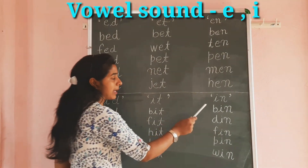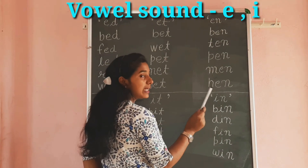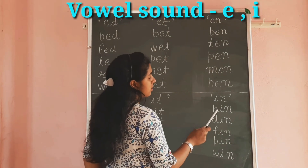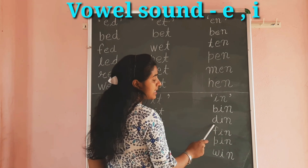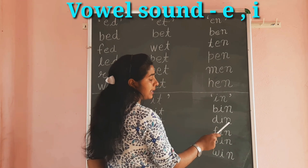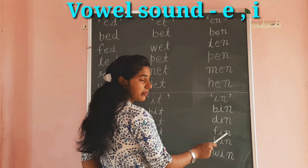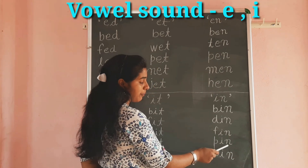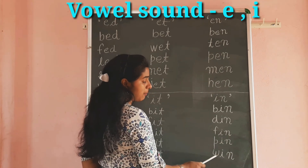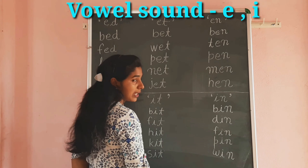Next we make words with the help of I-N: B-I-N, Bin. D-I-N, Din. F-I-N, Fin. P-I-N, Pin. W-I-N, Win.